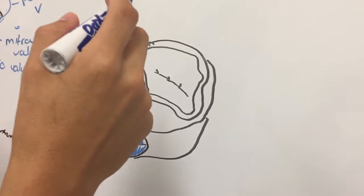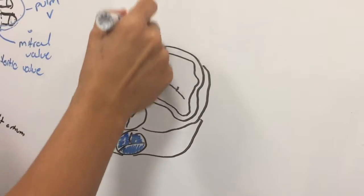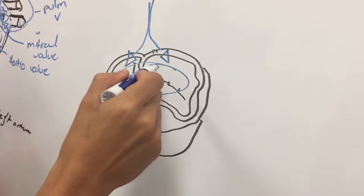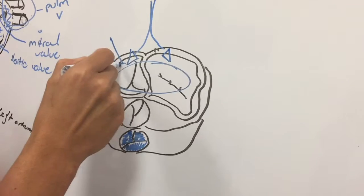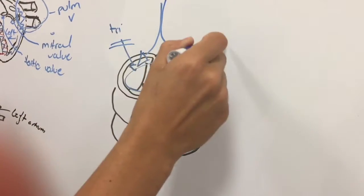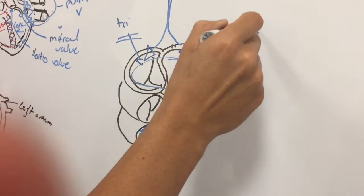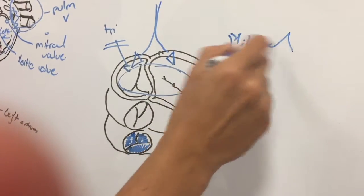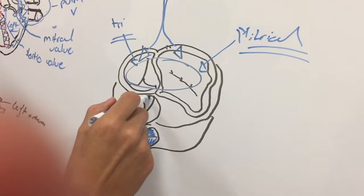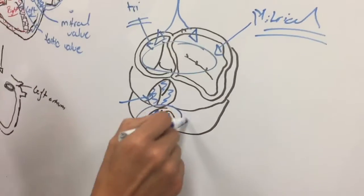Essentially, you have the atrial ventricular valves, which is between the atrium and the ventricle. The one towards the left would be the tricuspid valve, and then the one in the right would be the mitral valve or the bicuspid valve. Now you have the aortic valve, and then below that you have the pulmonary valve.